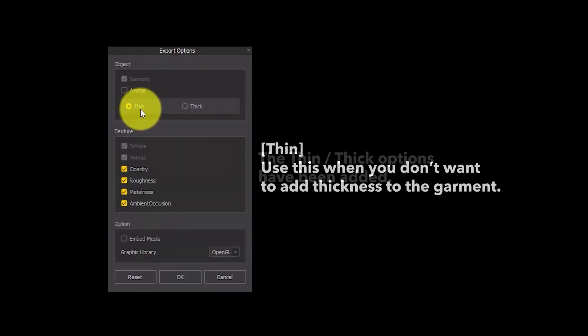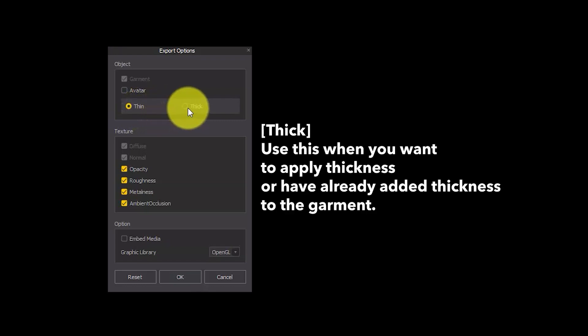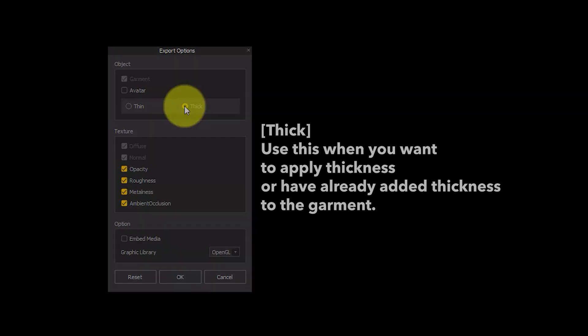If you don't want to add thickness to the garment, select Thin in the Export options before exporting. However, if you want to apply thickness values or have specifically added thickness to the garment, choose the Thick option when exporting.